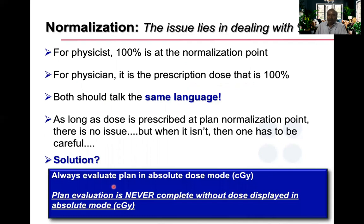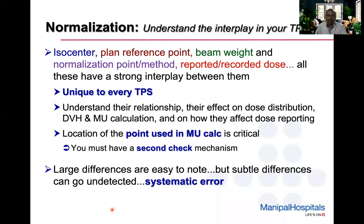The solution is to always evaluate the plan in absolute dose mode — in centigrade. Plan evaluation is never complete without the dose being displayed in absolute dose mode. Understand the interplay in your TPS: the isocenter, planned reference point, beam weight, normalization point method, reported and recorded dose all have a strong interplay, and they are unique to every treatment planning system. Also check the location of the point used in MU calculation — subtle differences can go undetected, resulting in a systematic error.